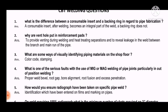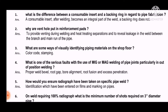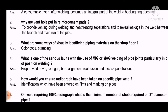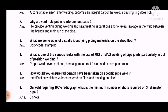Question 3: What are some ways of visually identifying piping material on the shop floor? The answer is: we can visually identify through color code and stamping.